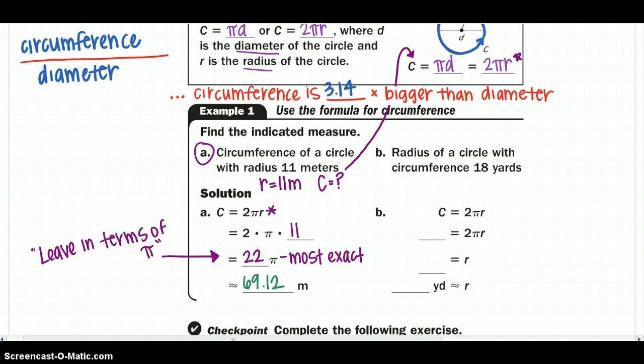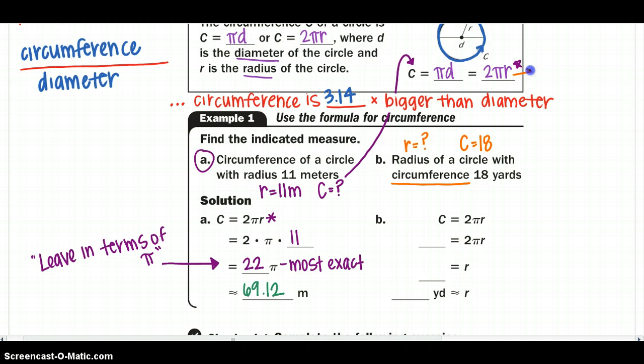Moving on to our next one, the radius. We want to find the radius this time, and the circle with the circumference of 18 yards. So again, if you haven't noticed or before, we normally are going to use this equation the most.